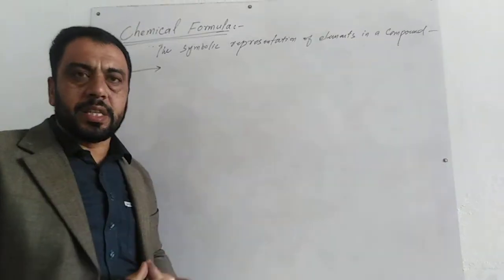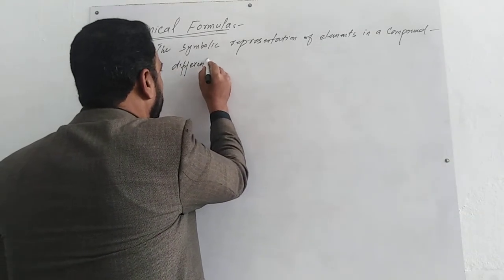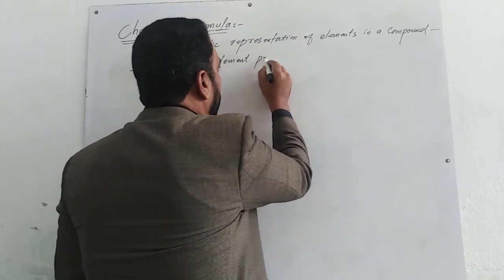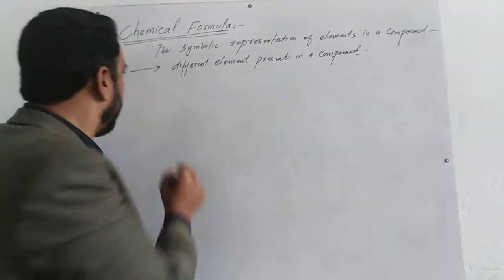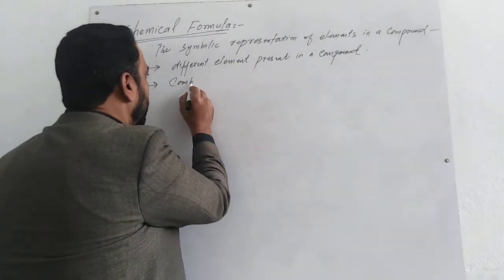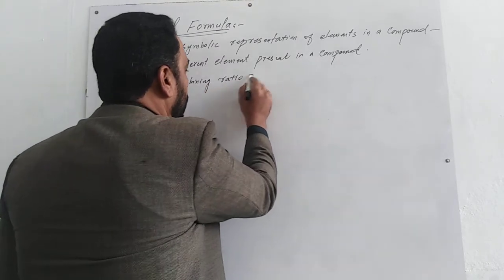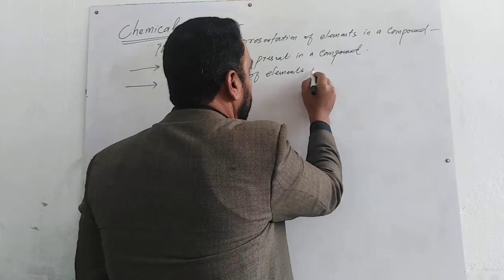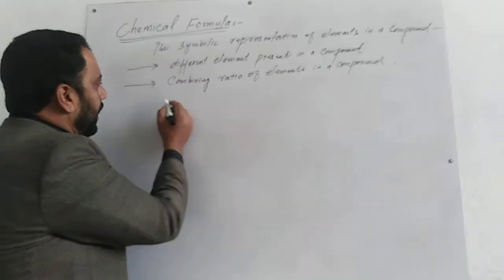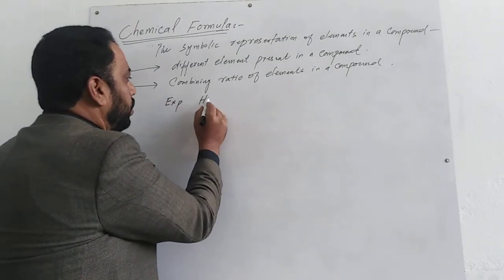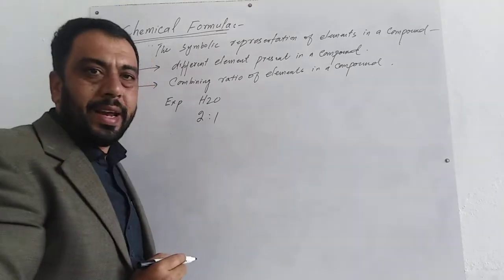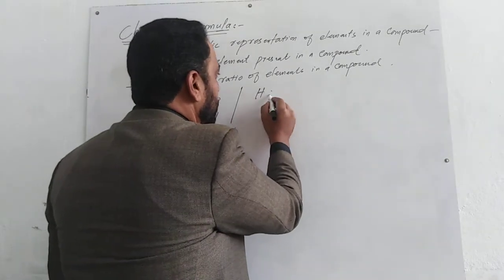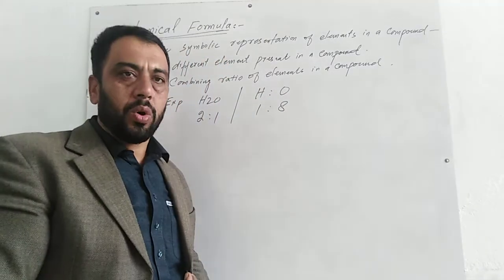Chemical formula tells us about the different elements present in a compound and the combining ratio of elements in a compound — kis nisbat se — based on what we find in a compound.